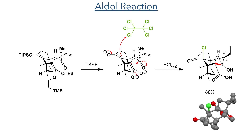Taking this forward, the compound was reacted with TBAF to remove the silyl groups. The enolate formed on the five-membered ring added to hexachloroethane, while the enolate formed from the ketene acetal underwent a Mukaiyama-type aldol addition into the ketone to reform the cyclobutanol ring. This product was isolated in a 68% yield.